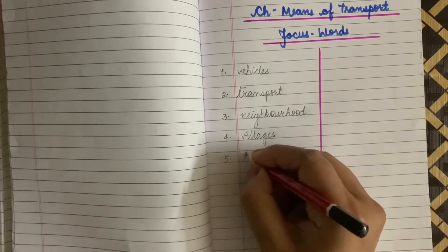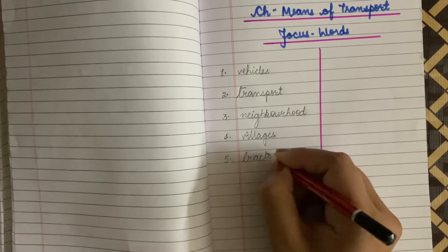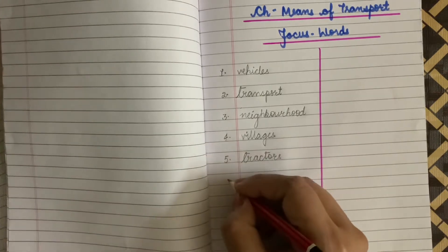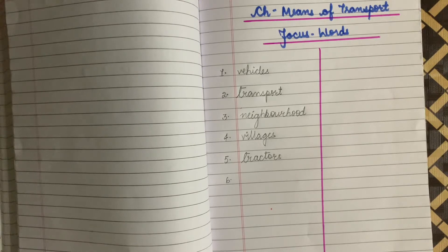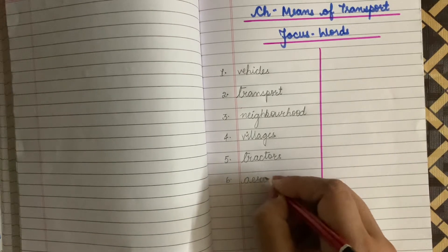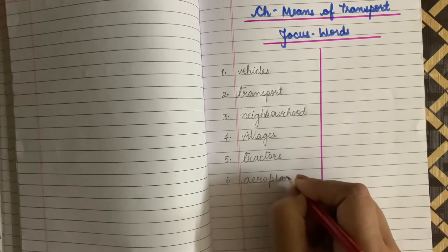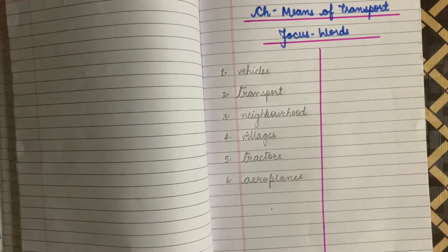Write down the next word: Tractors. T-R-A-C-T-O-R-S, Tractors. Write down the next word: Aeroplanes. A-E-R-O-P-L-A-N-E-S, Aeroplanes.